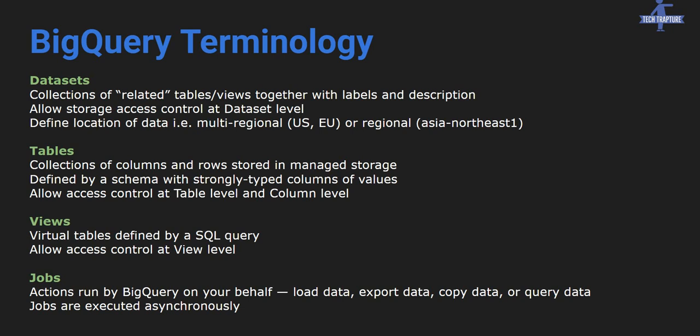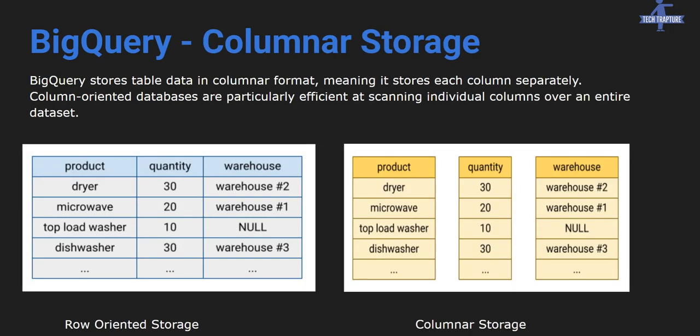After dataset, we have tables — data stored in the form of rows and columns, which you're likely already familiar with. Then there are views, which are virtual tables defined by a SQL query. And then there are jobs — these are actions run by BigQuery on your behalf. A job can be executing a SELECT query, loading data, exporting data, or copying data. Anything that BigQuery performs on your behalf acts as a job.